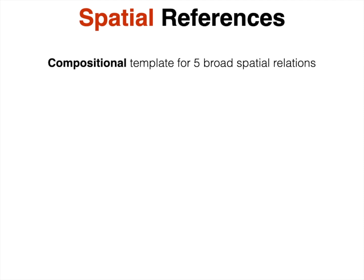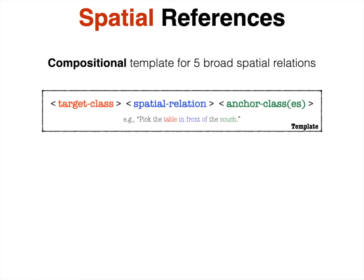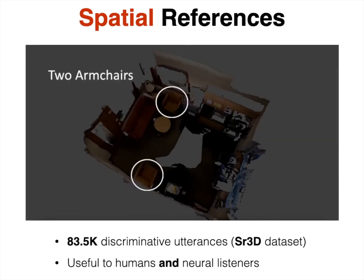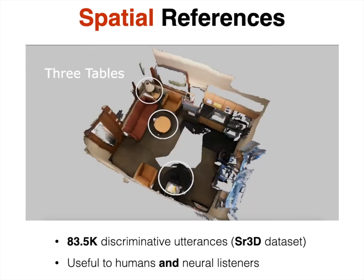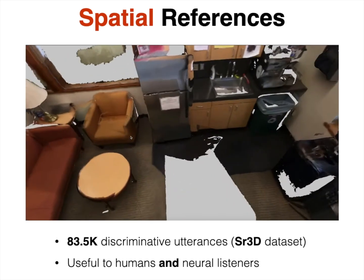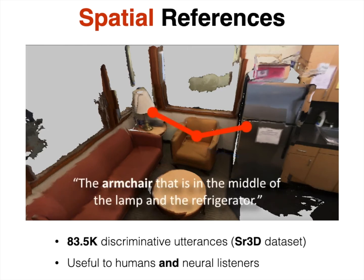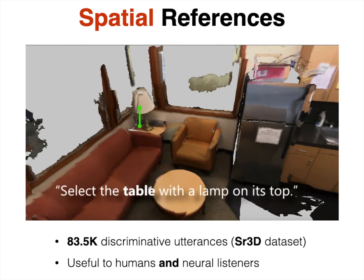Following this insight, we augment our natural utterance dataset with synthetic utterances that express spatial reasoning. Specifically, we create a corpus using a compositional template that considers five broad types of spatial relations among 3D objects. The generated utterances aim to unambiguously distinguish the target from its intraclass distractors by considering its spatial relations with other anchor objects of the scene. The resulting dataset contains more than 80,000 discriminative utterances. In a conducted study with 2,000 sampled utterances, human listeners identified correctly the target object 86% of the time. We also observe that augmenting our natural data with the template-based references results in improved accuracy.